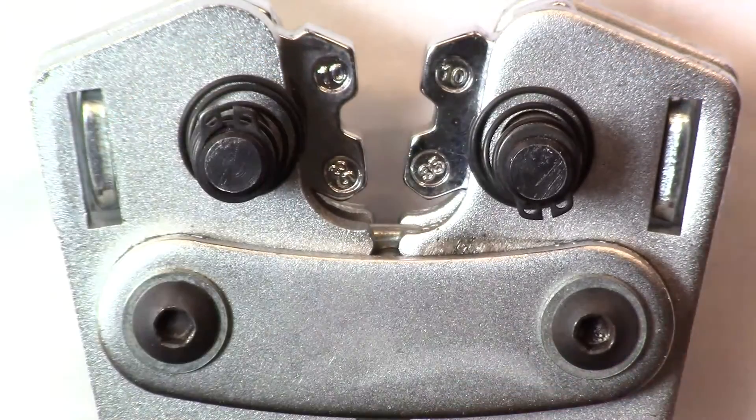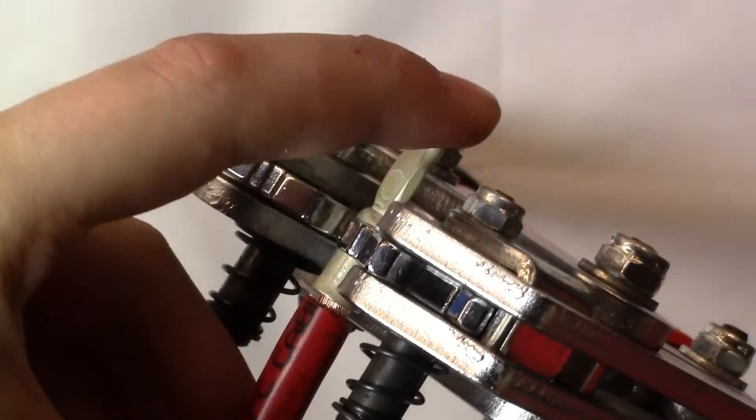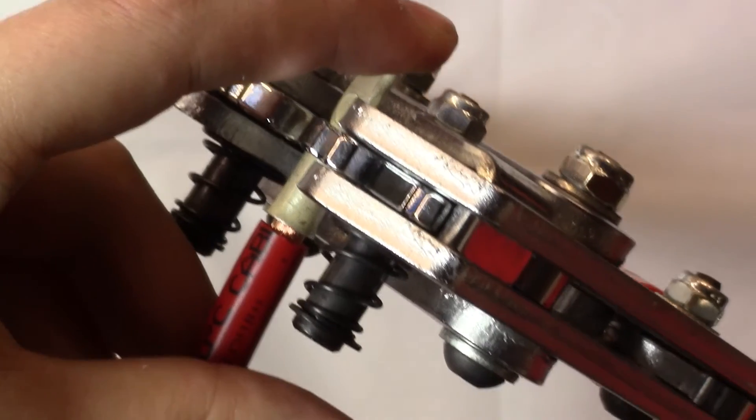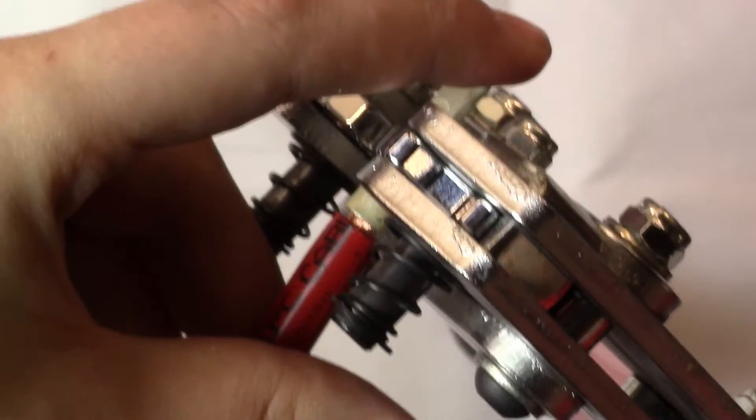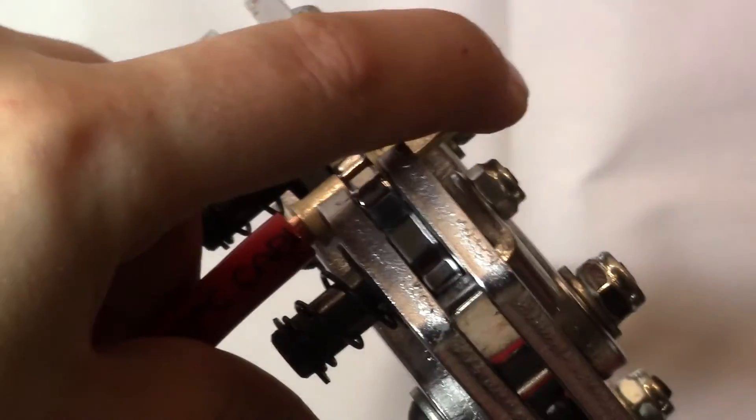Once done just release the locking mechanism and it will hold in place. When crimping it is best to try and create a double crimp if possible just for extra strength.